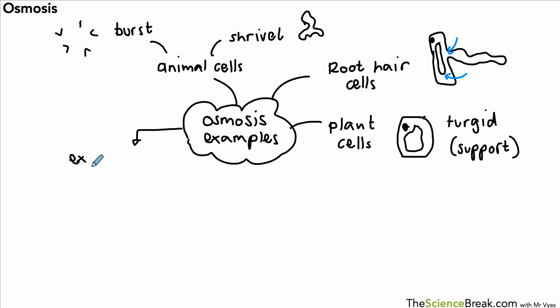Experiments with osmosis include experiments with potato, but it could be not just potato, could be other plant tissue as well—carrot, celery, whole range of other plant tissues.